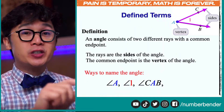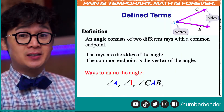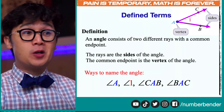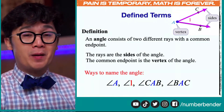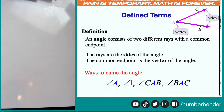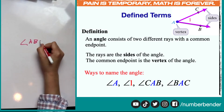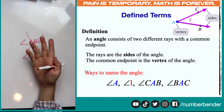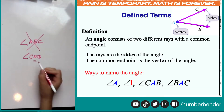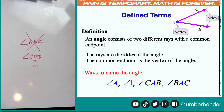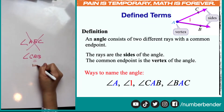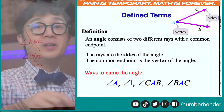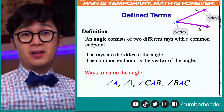We can also interchange the sides of our angle, but not the vertex, and we can call this angle BAC. Notice that in those last two notations, the letter A — our vertex — did not move. If you write your angle as angle ABC, this is not the same as angle CAB. So make sure that your vertex is always in the middle of your three-letter angle notation so you will not get confused.